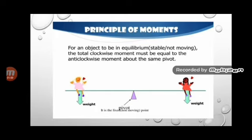According to the principle of moments, in equilibrium, the total clockwise moments must be equal to the total anticlockwise moments. For an object to be in equilibrium, the total clockwise moments must equal the total anticlockwise moments.